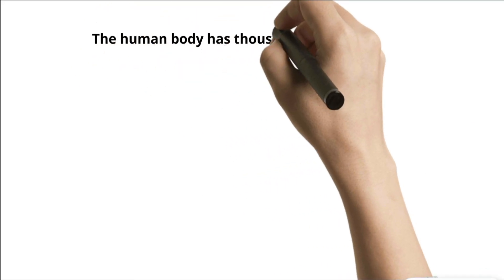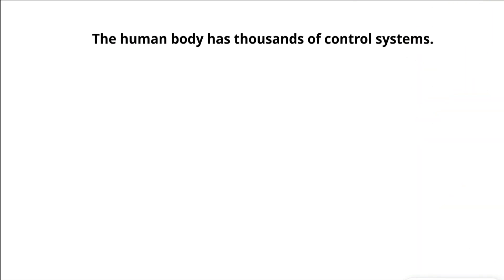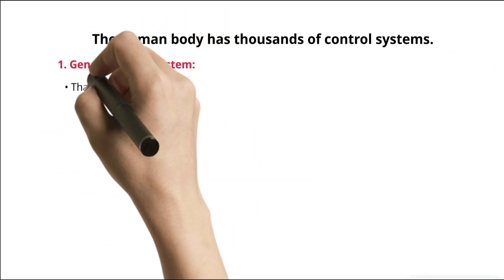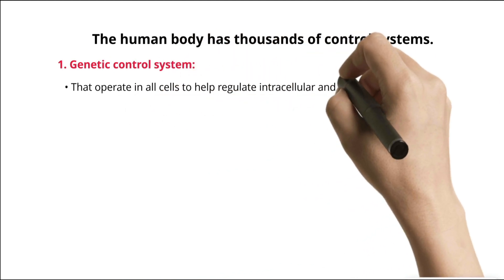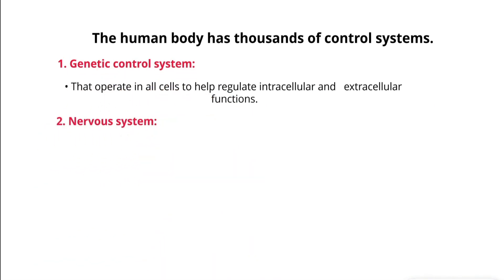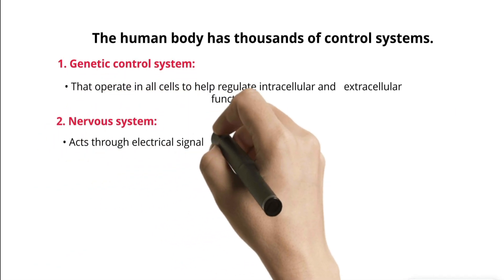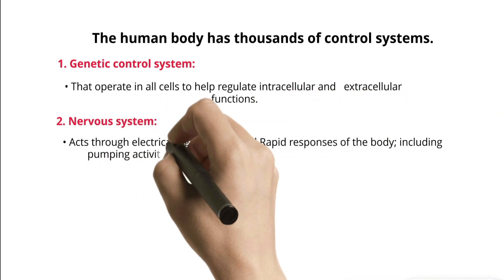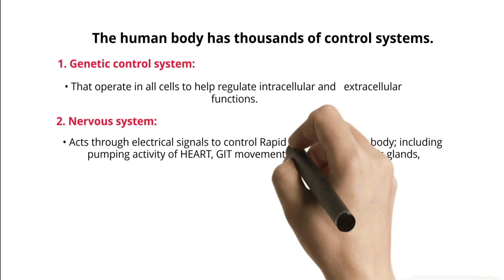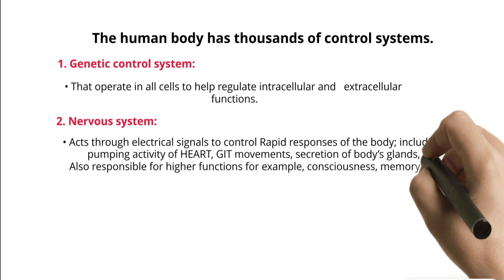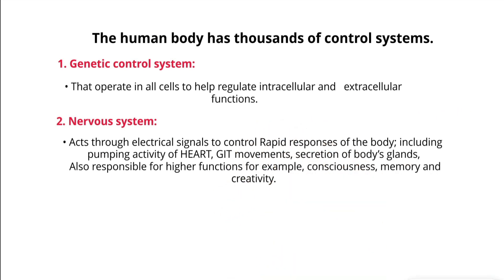The human body has thousands of control systems. 1. Genetic control system that operate in all cells to help regulate intracellular and extracellular functions. 2. Nervous system — acts through electrical signals to control rapid responses of the body, including pumping activity of heart, GIT movements, secretion of body's glands, and also responsible for higher functions, for example, consciousness, memory, and creativity.